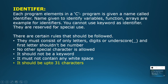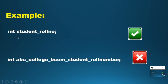The fifth rule is: an identifier should contain at most 31 characters. For example, 'int student_role_number' — counting the characters: s-t-u-d-e-n-t gives 7, continuing up to 14 characters — is accepted. The compiler will accept identifiers up to 31 characters, but if it exceeds 31 characters it will not be accepted.